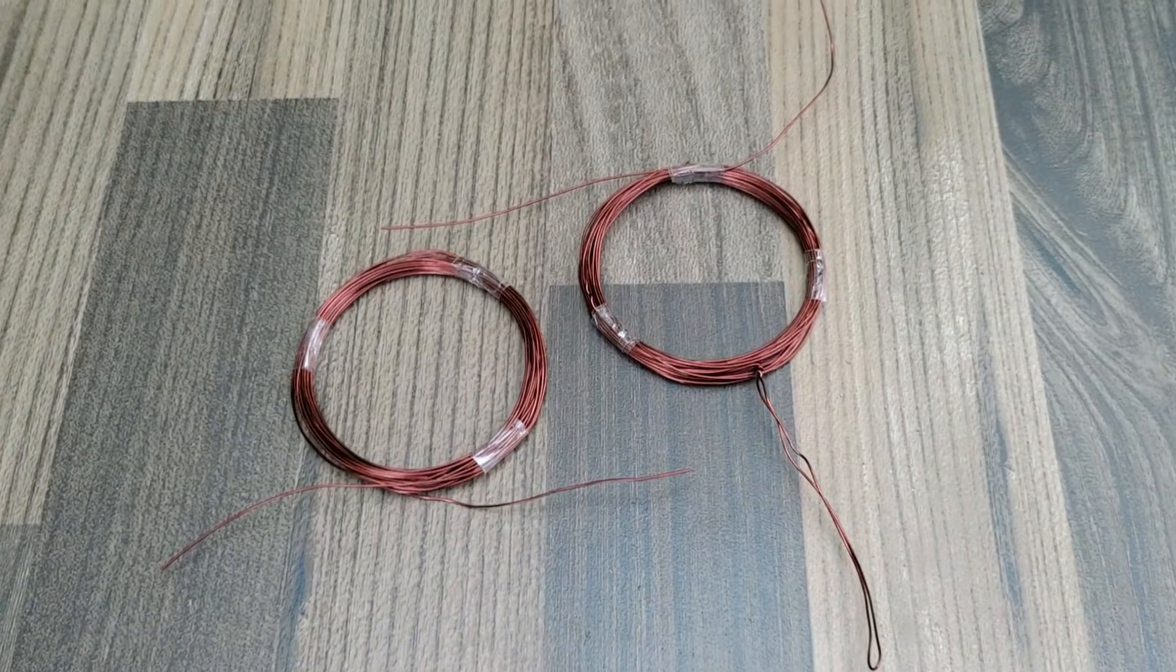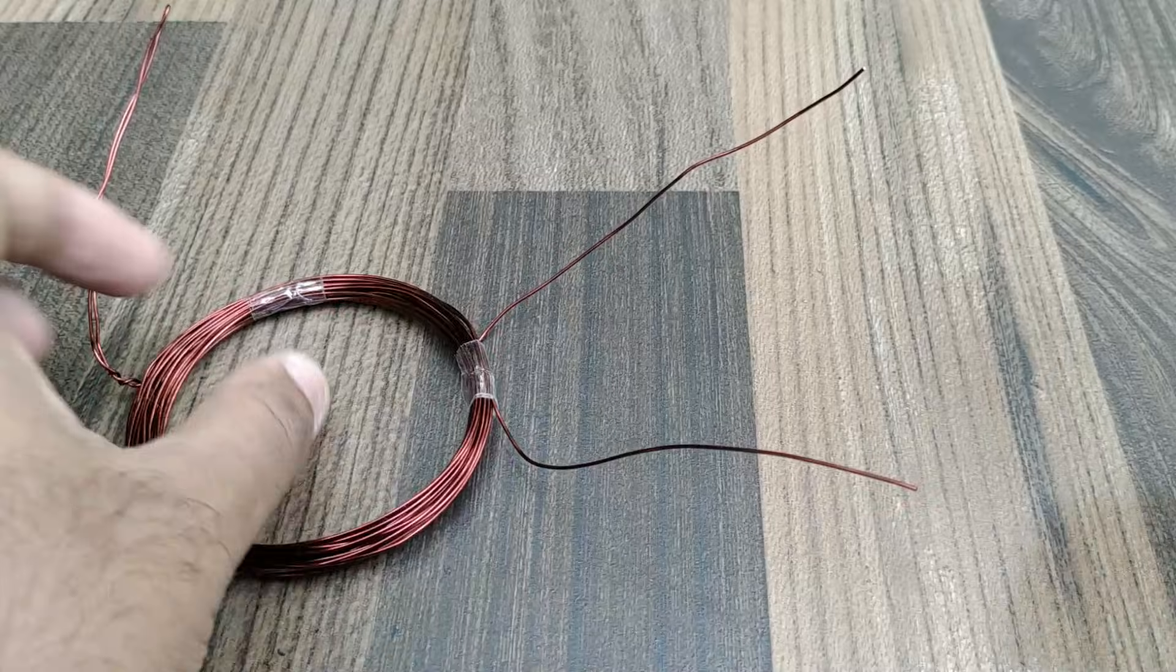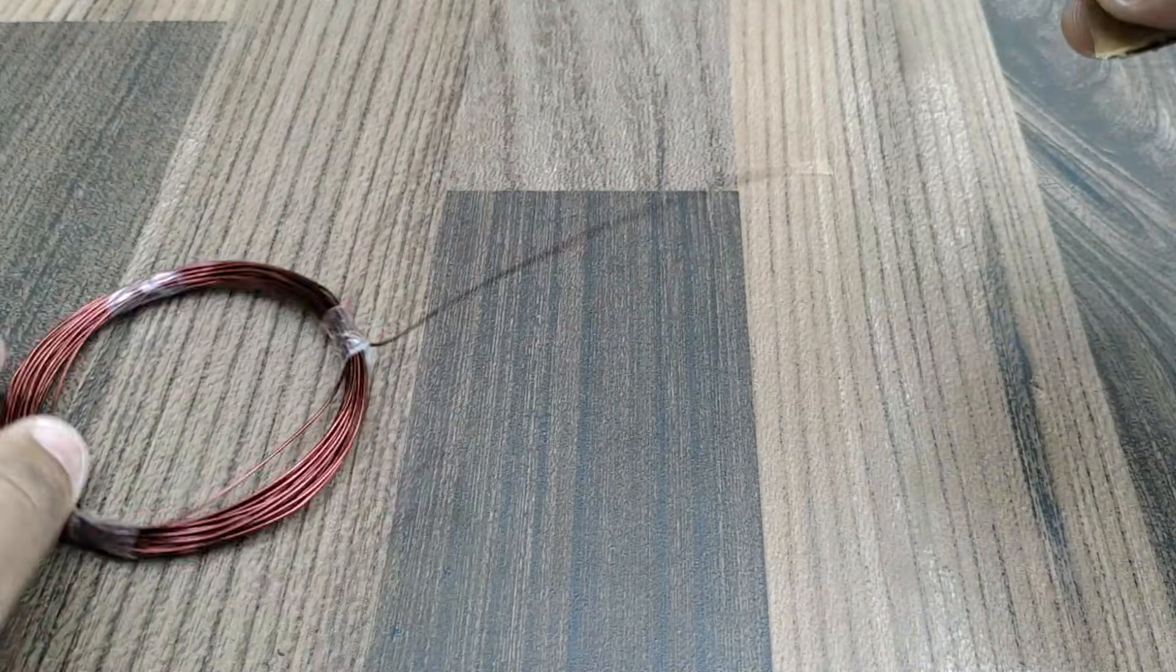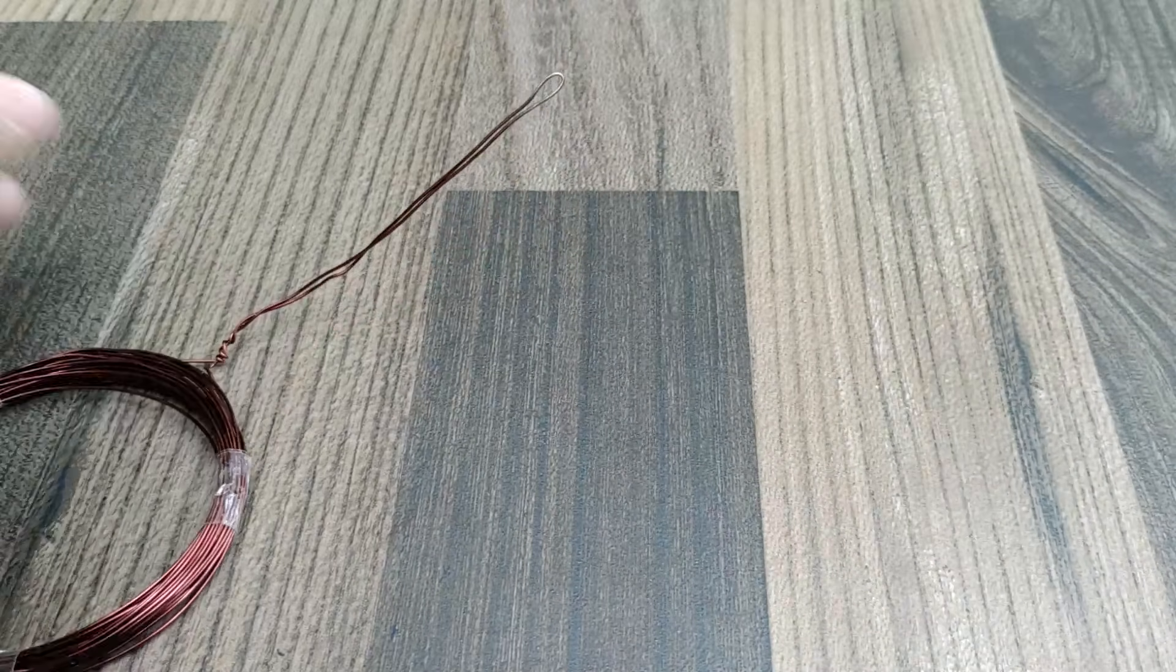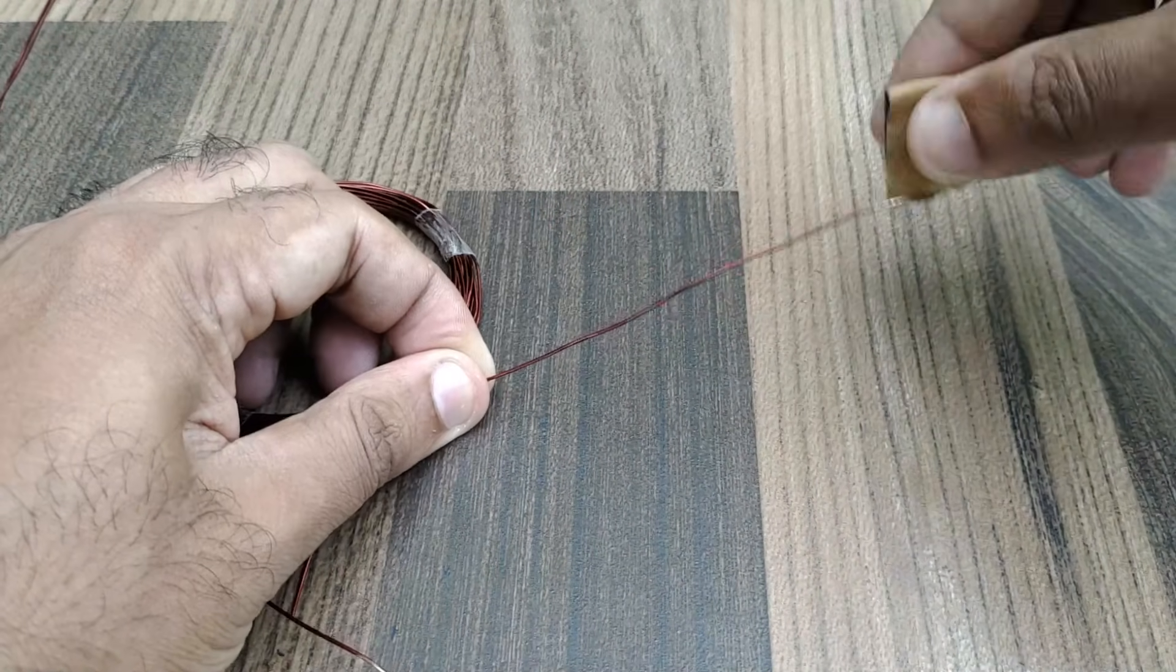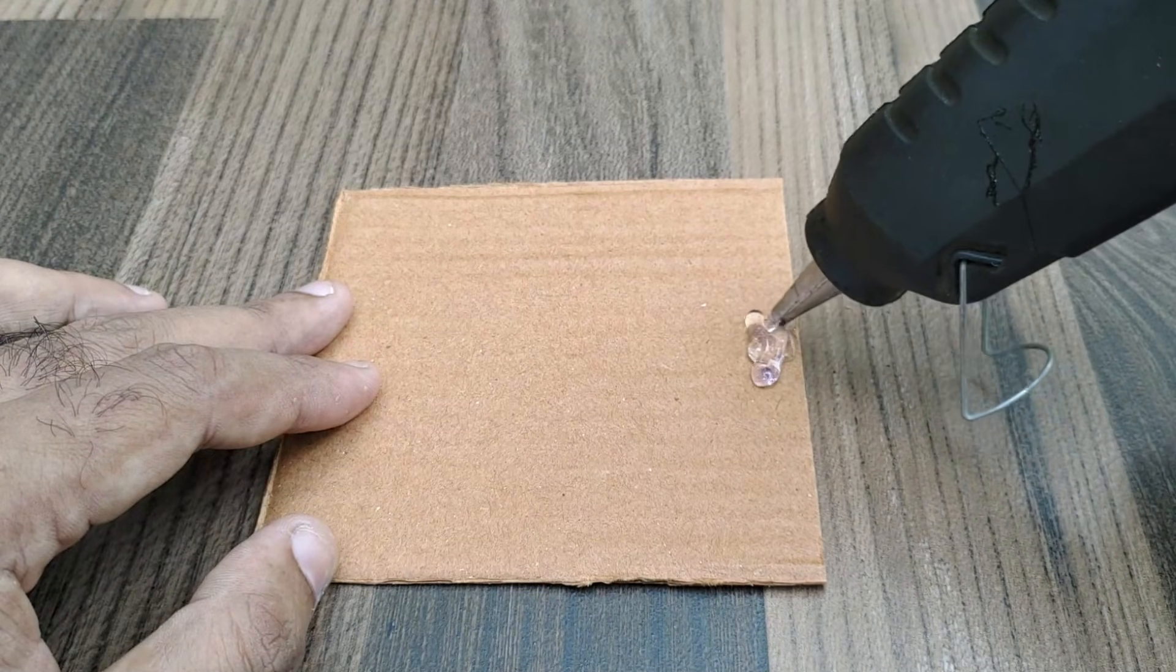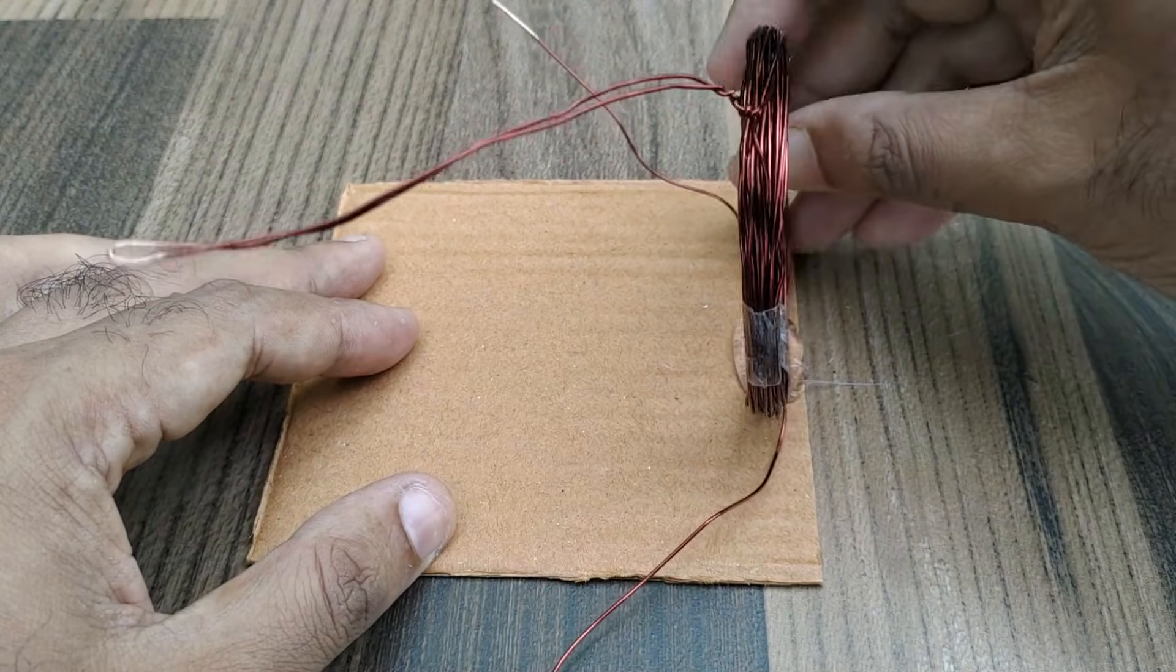Both the transmitter and receiver coils are now ready. Now let us make the circuit for wireless transmission. Remove the insulation from the tips of wire using an emery paper. Take a cardboard paper and fix the coil, battery and switch as shown.